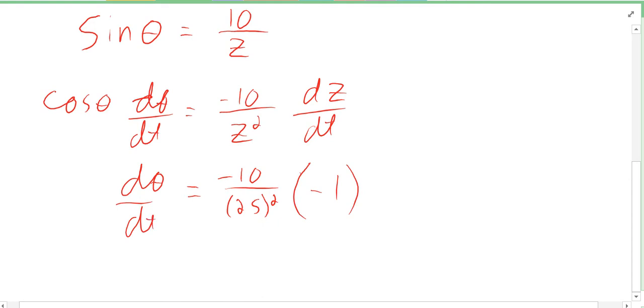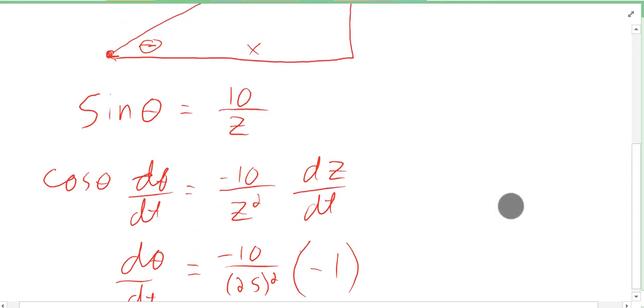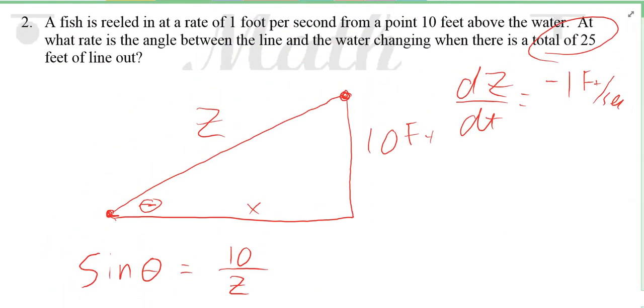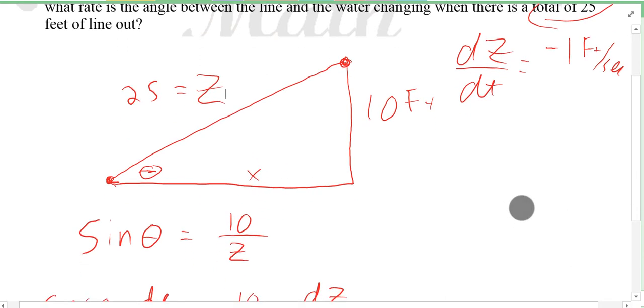We're not supposed to know dθ/dt—that's what we want to find. So I gotta find cosine theta. Remember, we don't need theta, we need cosine of theta. If we know Z is 25 at this point in time, to get cosine we need x over 25. We're going to solve for x with the Pythagorean theorem: x squared plus 10 squared equals 25 squared, which means x squared plus 100 equals 625.